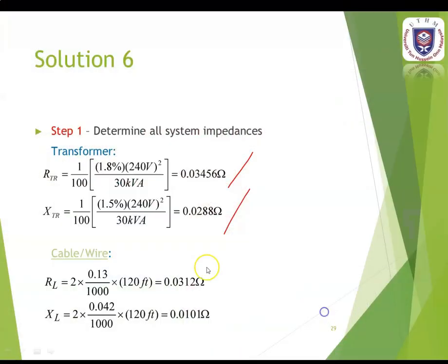After that, you use the single-phase equation to determine the resistance and reactance of the cable, which is 2 times the resistance or reactance per 1000 feet, times 120 feet. For the resistance you get 0.0312 ohms, while for the reactance you get 0.0101 ohms.